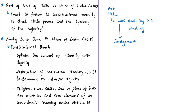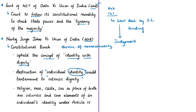In the case of Government of NCT of Delhi versus Union of India, in 2018, the Supreme Court observed that the court should follow its constitutional morality to check state power and the tyranny of the majority. In 2018, in the case of Navtaj Singh Johar versus Union of India, popularly known for the decriminalization of homosexuality, the constitutional bench of the Supreme Court upheld the concept of identity with dignity. The court mentioned that destruction of individual identity means crushing the intrinsic dignity of a human being, encapsulating the values of privacy, choice, and freedom of speech and other expressions.